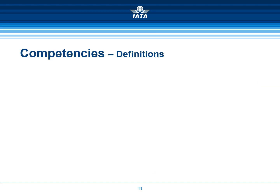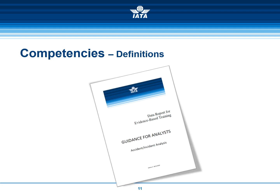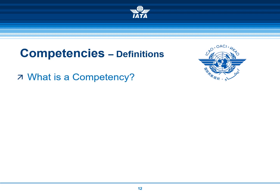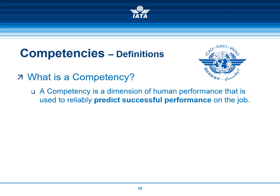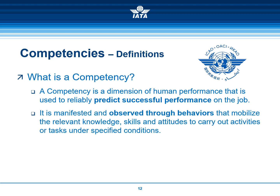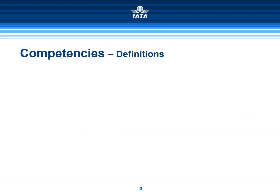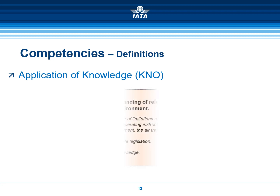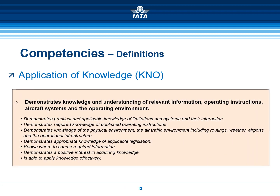Let's now go through the competency definitions and observable behaviors as listed in the guidance for analysts. According to the ICAO definition, a competency is used to predict successful performance on the job and must be observed through behaviors. The competency Application of Knowledge (KNO) is described as the pilot's ability to proactively refer and apply relevant knowledge as the operational context evolves. Please have a look at the observable behaviors.